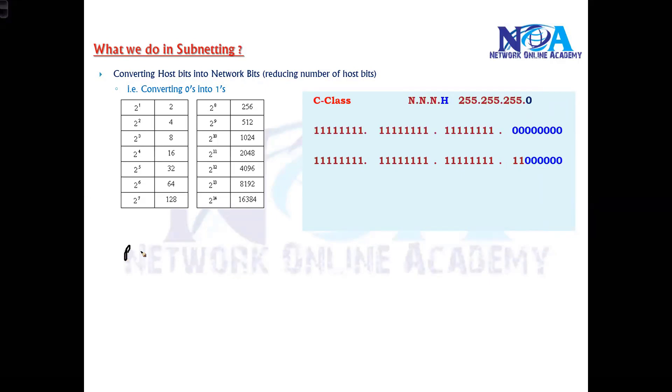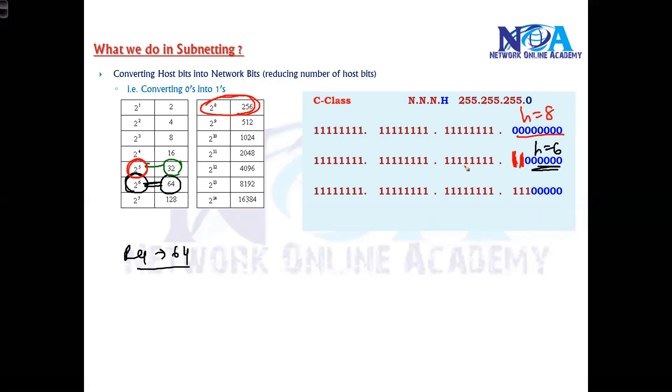If my requirement is 64 size, as per the 64 size, how many host bits are enough for me? Six. Which means I'm using only six host bits and the remaining I'm going to convert them into network. If your requirement is, let's say 32, then I'm doing 32, which means I just need only five host bits. So we are using only five host bits and the remaining three I'm converting into network. If my requirement is 16, then I need only four host bits, 2 to the power of 4. We'll be using only four host bits and the remaining I'm converting into network.